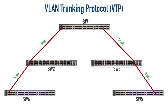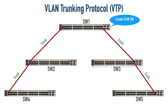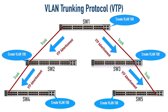For example, here on Switch SW1, maybe I create VLAN 100. If we have VTP configured, SW1 can send VTP advertisements over its trunk links down to switches SW2 and SW3. They update their VLAN database and create VLAN 100. Then they forward the VTP advertisements down to switches SW4 and SW5, and those switches also have VLAN 100 created in their VLAN database. That's the quick overview of what VTP does for us, but let's get more detailed.